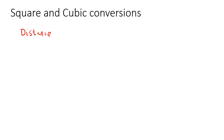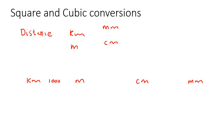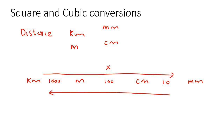So in previous lessons where we looked at converting distance, we said that with distance we get things like kilometers, meters, millimeters, and centimeters. And in that lesson I also showed you a conversion that we use between all of them. So kilometers, then it was meters, then it was centimeters, and then it was millimeters. Between kilometers and meters it was a thousand, here it was a hundred, and here it was ten. And we said that when you go this way you would multiply, and then when you go this way you would divide.